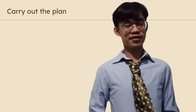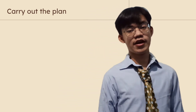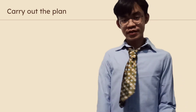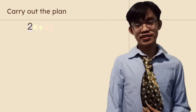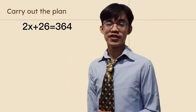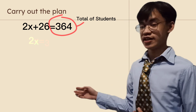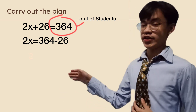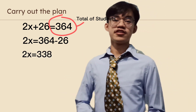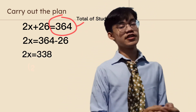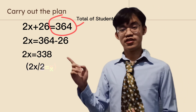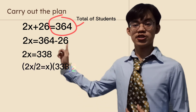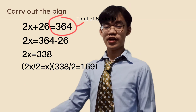Then, to carry out the plan — if you are wondering how I got the total of 364 in the equation — we need to solve it like this. So, 2x plus 26 equals 364. Then, 2x equals 364 minus 26. So, 2x divided by 2 equals 338 divided by 2. The answer is 169.